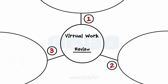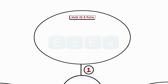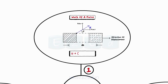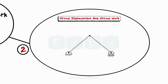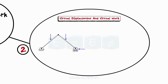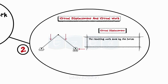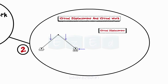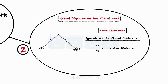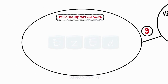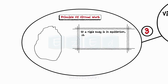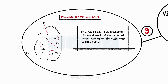Let's have a quick review of what we have studied in this lecture. Firstly, we learnt about work of a force: the work done by a force during infinitesimal displacement is equal to the product of the displacement and the component of the force in the direction of displacement. Next, we learnt about virtual displacement and virtual work: an imaginary infinitesimal displacement assumed to be given to the body in equilibrium is called virtual displacement, and the resulting work done by the forces on the body during the virtual displacement is called virtual work. The symbols used are δx or δy for linear displacement along the x-axis and y-axis respectively, and δθ for angular displacement. Finally, we learnt about the principle of virtual work, which states that if a rigid body is in equilibrium, the total work of the external forces acting on the rigid body is zero for any virtual displacement of the body.